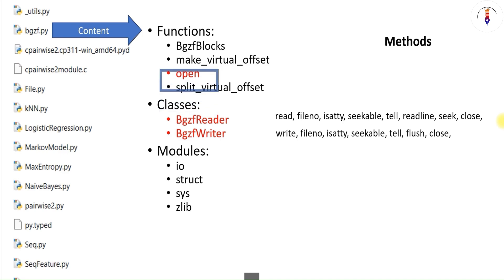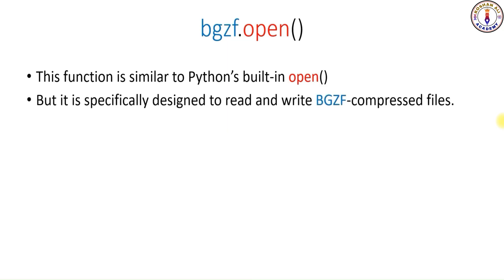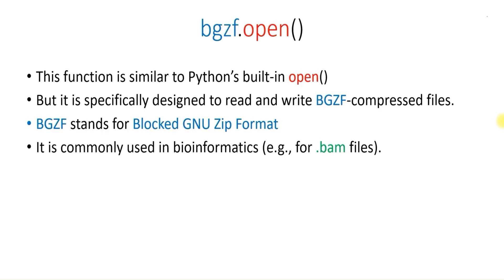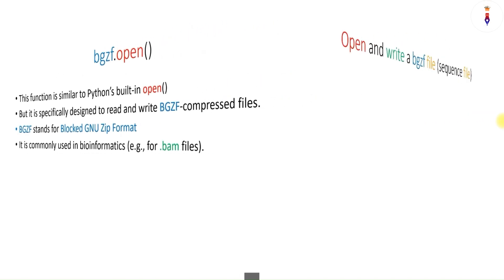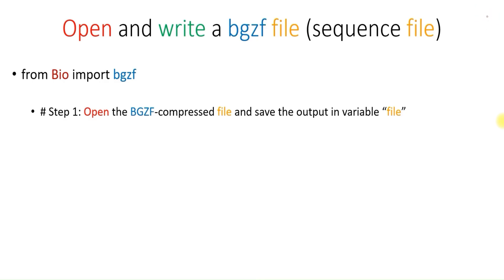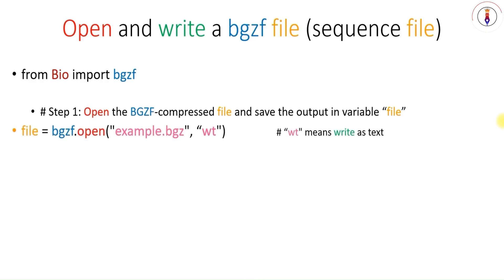Now let's start with the open function. This function is similar to Python's built-in open function, but it is specifically designed to read and write BGZF compressed files. BGZF stands for Blocked GNU Zip Format and is commonly used in bioinformatics, for example for BAM files. First, you have to import the BGZF module using the import command. Then open the BGZF compressed file and save the output in a variable called file. This command will create a file named example.bgz with mode wt.